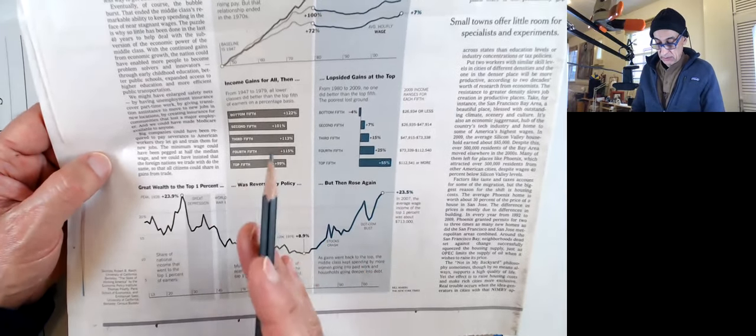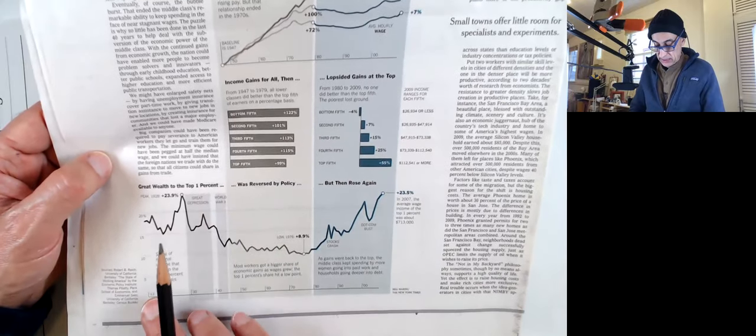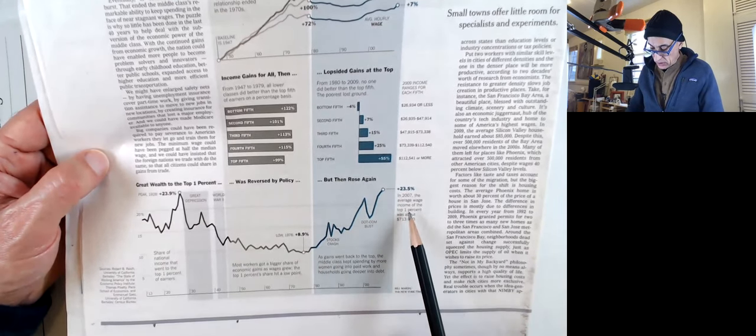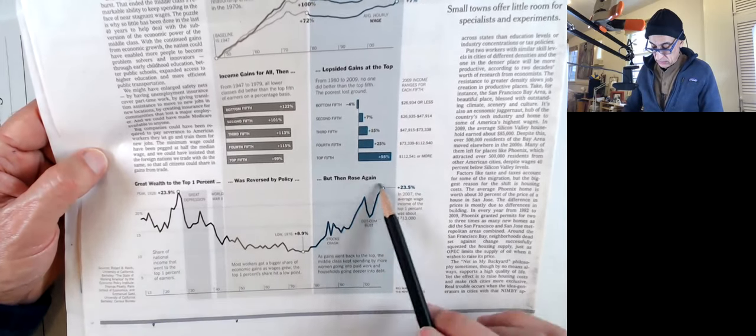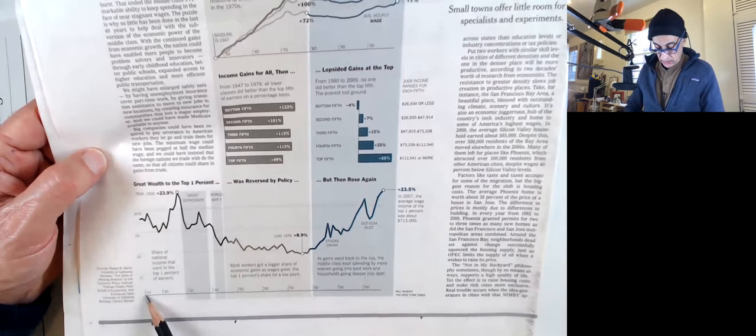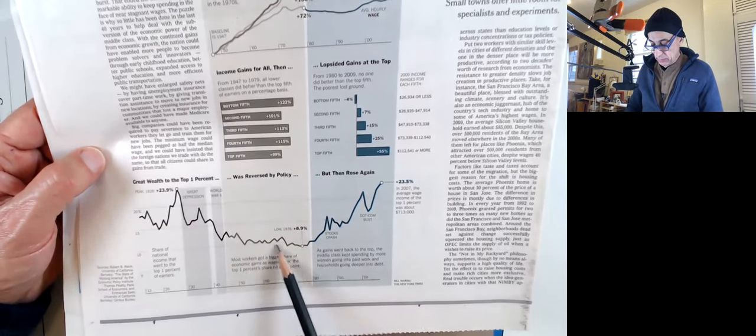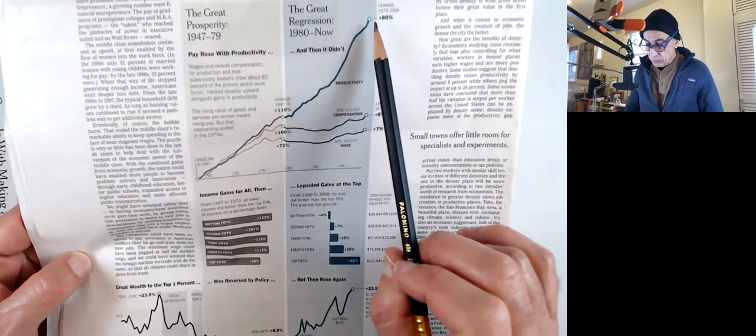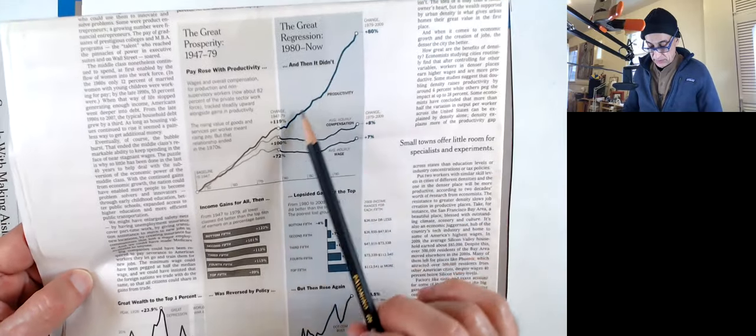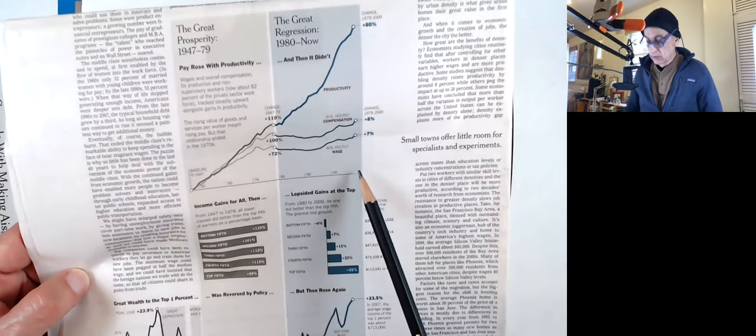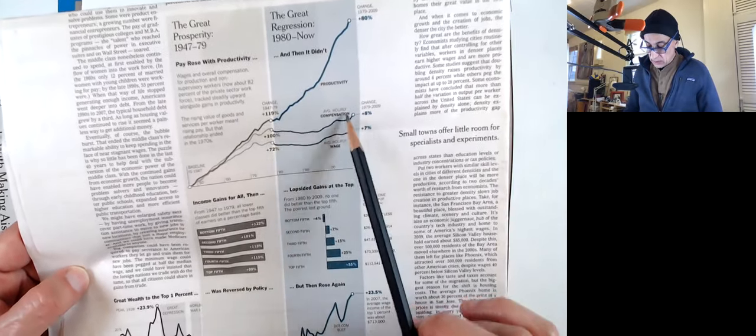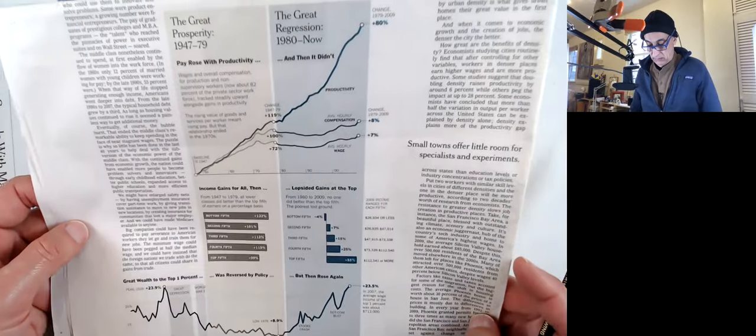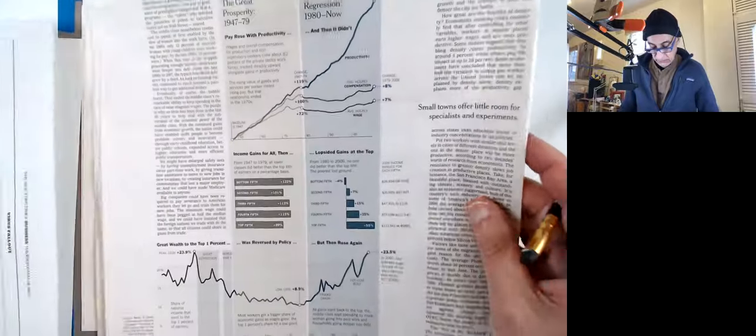The New York Times, believe it or not, in some plants where they print the newspaper, they still can't do full color on every page. So that's why some pages are always black and white. Also because they want to make it the same throughout the United States, even though some plants can print all color, they'll just keep it to the more common denominator.